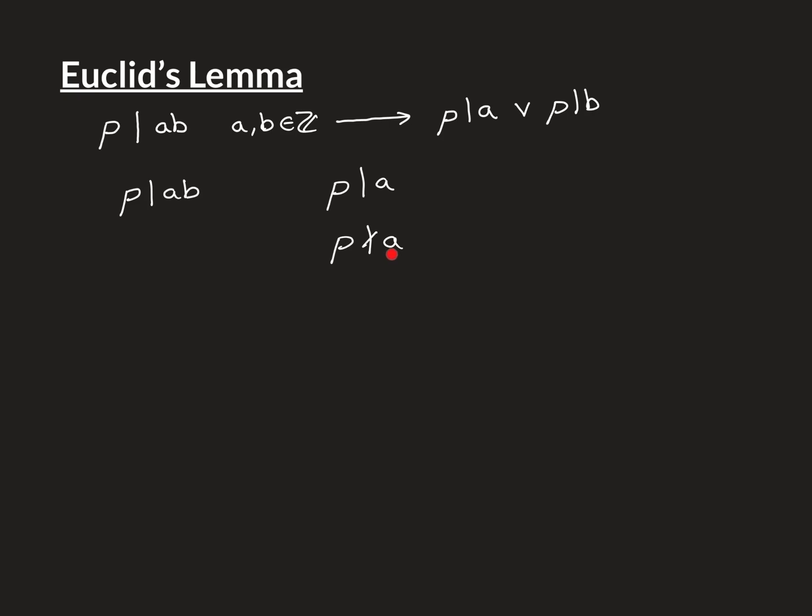From the fact that P doesn't divide A, we can actually conclude that the greatest common divisor, the GCD, of P and A is 1. And the reason you can do that is because P is a prime number.